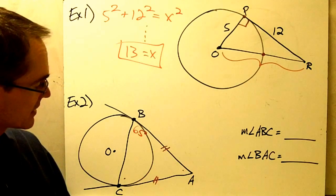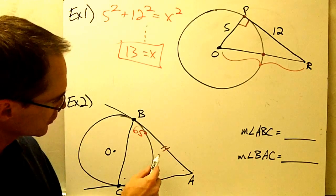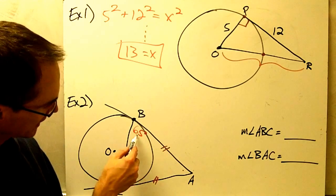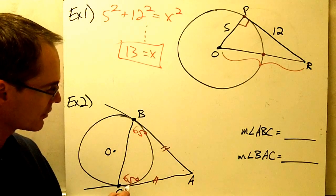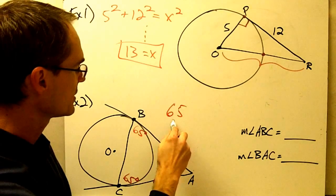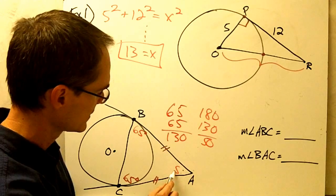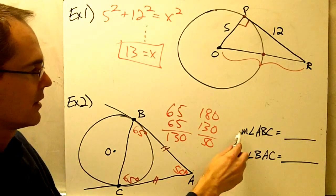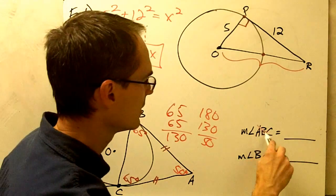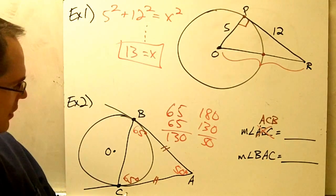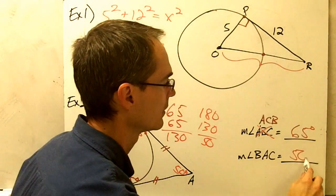If these two segments are congruent, then I notice that triangle ABC must be an isosceles triangle. And if it's an isosceles triangle, that means its base angles — the angles that are opposite those congruent sides — must be congruent. So that tells me that this angle must also be 65 degrees. Now that I know those two angles, I can figure out that third angle by adding 65 and 65, that gives me 130, and subtracting from 180, which tells me that this angle is 50 degrees. So the measure of angle ACB is 65 degrees, and the measure of angle BAC is 50 degrees.